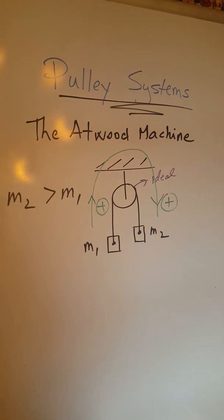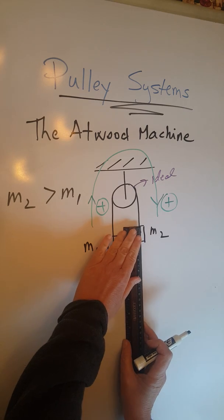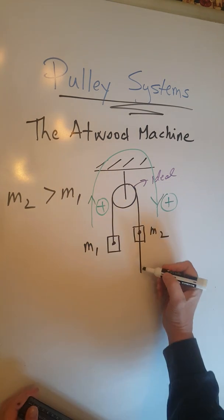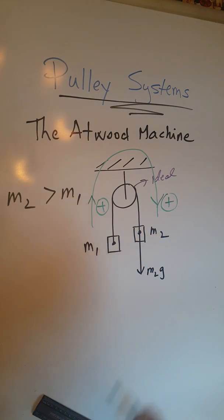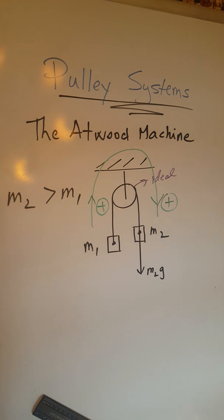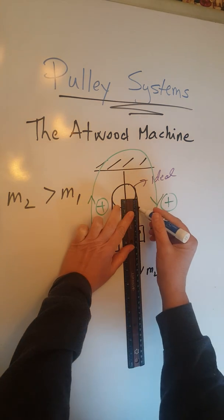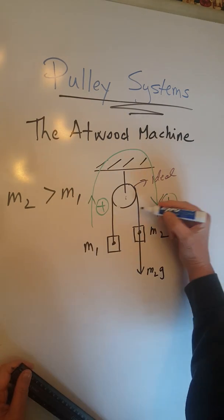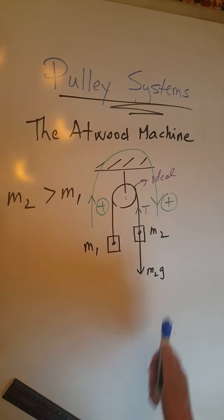Let's consider the forces on m2. The force of gravity acts from the center of gravity, always vertically downward — labeled m2g. There is also a force of tension in the string. Tension is always a pull along the string, so the tension force on m2 acts upward along the string, labeled T in blue. Those are the only two forces acting upon m2.